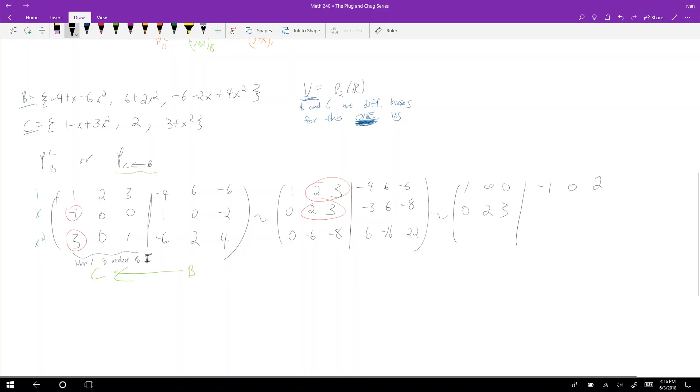You subtract row one from row two: 1, 0, 0. Now you get negative 1, 0, positive 2. And here's 0, 2, 3. I'm actually gonna take this row and I'm gonna divide this row... No, I'm not gonna divide that row by anything. We're just gonna write this row down: 0, negative 6, negative 8, and then negative 3, 6, negative 8, 6, negative 16, 22.